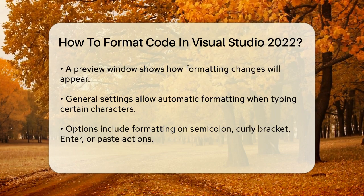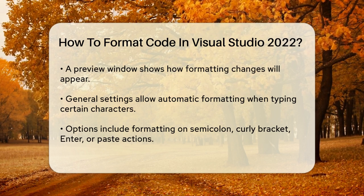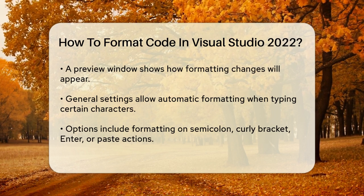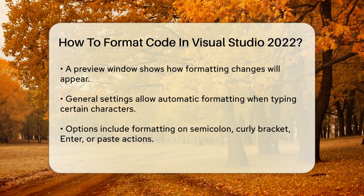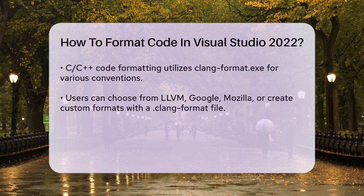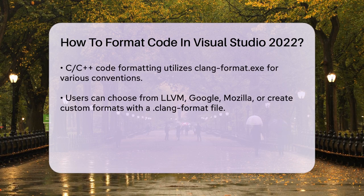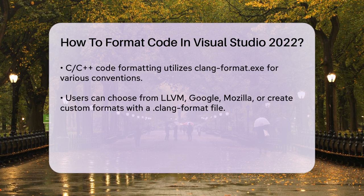If you're working with C/C++ code, Visual Studio 2022 uses ClangFormat.exe to format your code. You can choose from common formatting conventions like LLVM, Google, or Mozilla, or even create your own custom format definition using a .clang-format file. This file can be placed in your project folder, and Visual Studio will use it to format all your source code files accordingly.